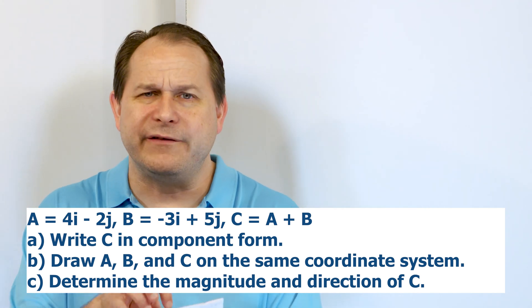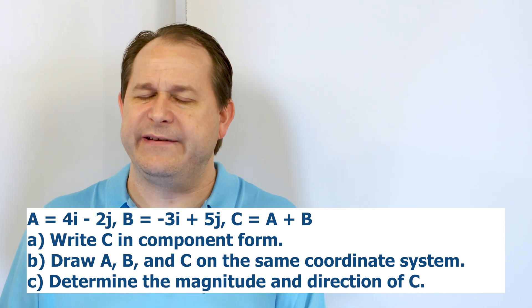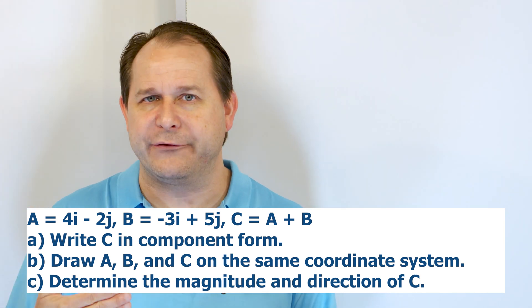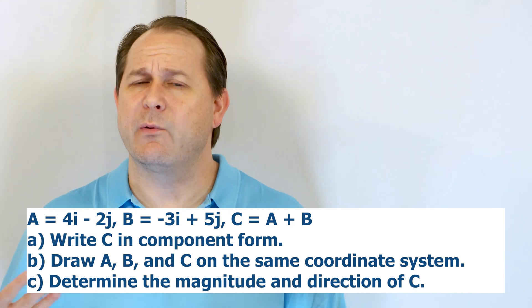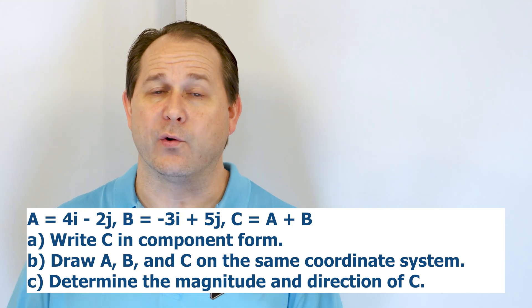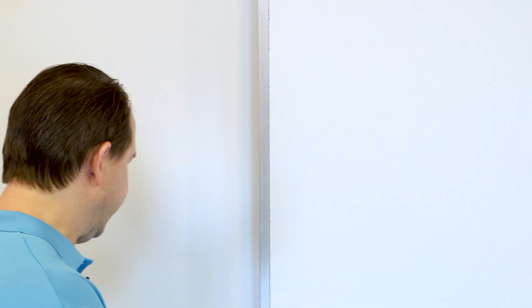There are a lot of words here, but it's really very simple. We have two vectors, A and B, and we want to add them together to form vector C. That's essentially what we're doing.